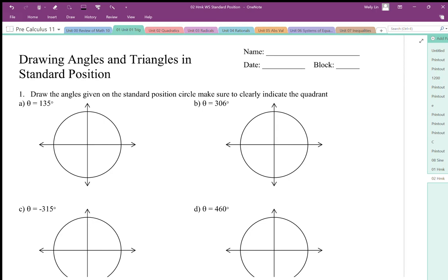Standard position is about locating a position in the xy plane, and we can do this in two ways: one, using an angle, or two, using an x and y coordinate. The x and y coordinate then relates to the ratio form of the angle.